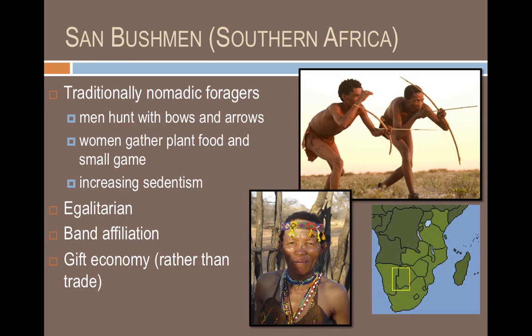Nomadism is an adaptation for finding food and getting regular access to it — the entire object is to go where the food is. Now, if there are places set up where people can get food year-round, it makes sense that people start to settle down where the food is. So San Bushmen are clustering more and more in villages because that's where they're able to get the food they need to survive.